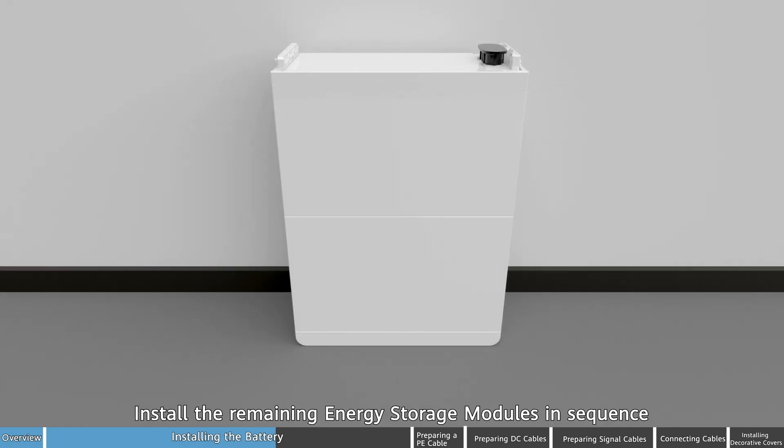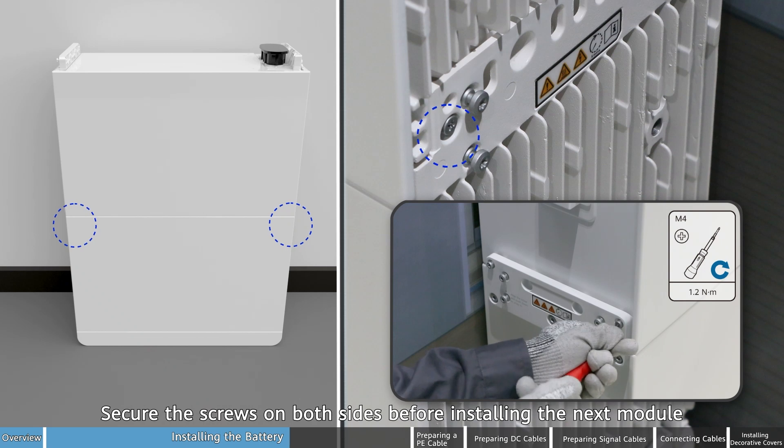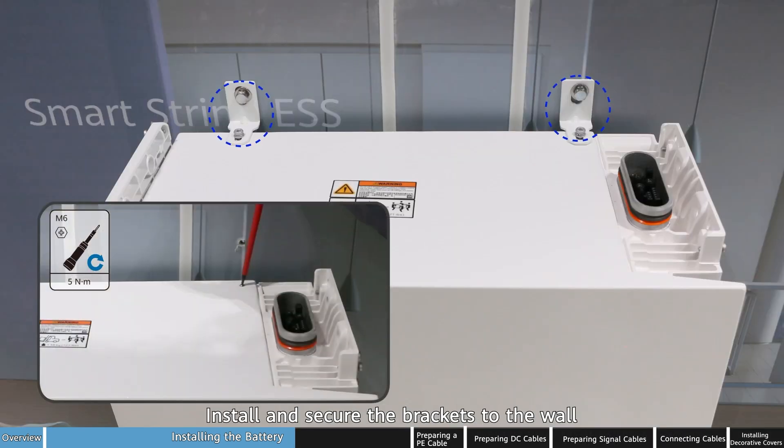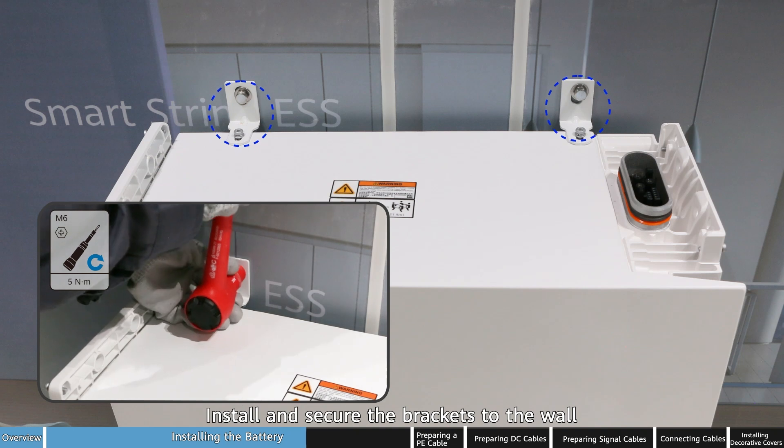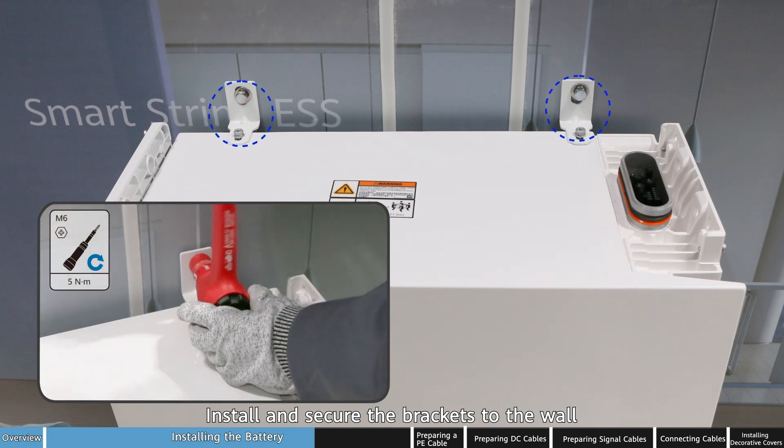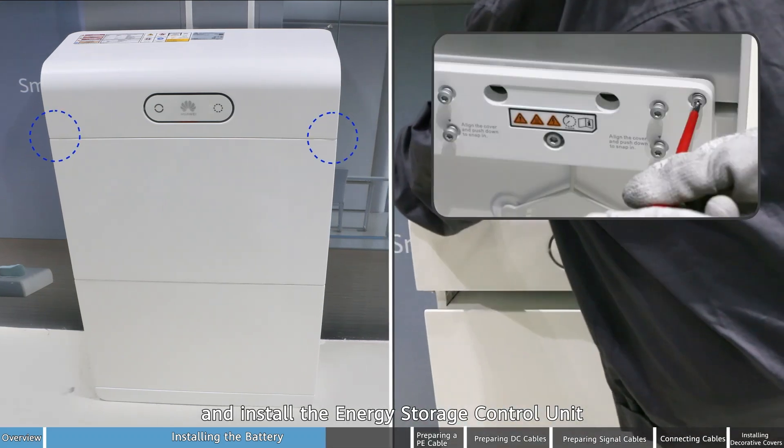Install the remaining energy storage modules in sequence. Secure the screws on both sides before installing the next module. Install and secure the brackets to the wall and install the energy storage control unit.